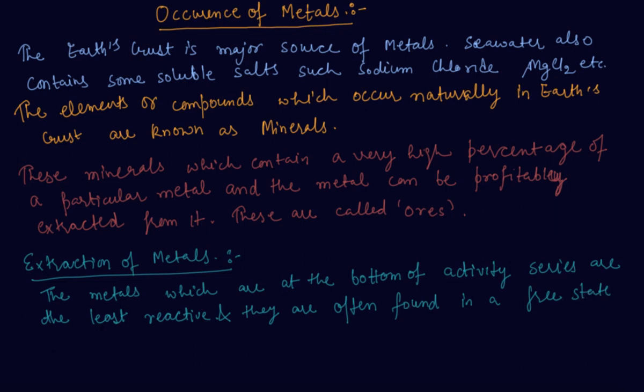For example, gold, silver, platinum, and copper. These are found in free states. Copper and silver are also found in combined states such as their sulphide or oxide ores.